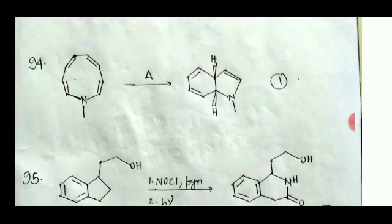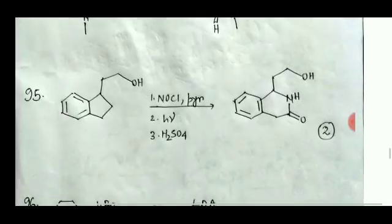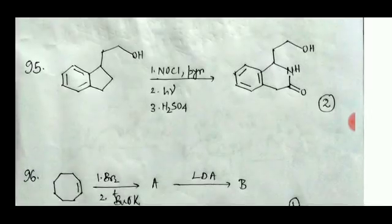Question number 94 is very interesting. Under heating conditions, if eight electrons are involved the electrocyclic ring closing should be conrotatory, but that would result in a trans-fused three-membered ring which is not possible. So a six-electron electrocyclic ring closing occurs instead, which is disrotatory, giving this product. Option 1 is the correct answer.